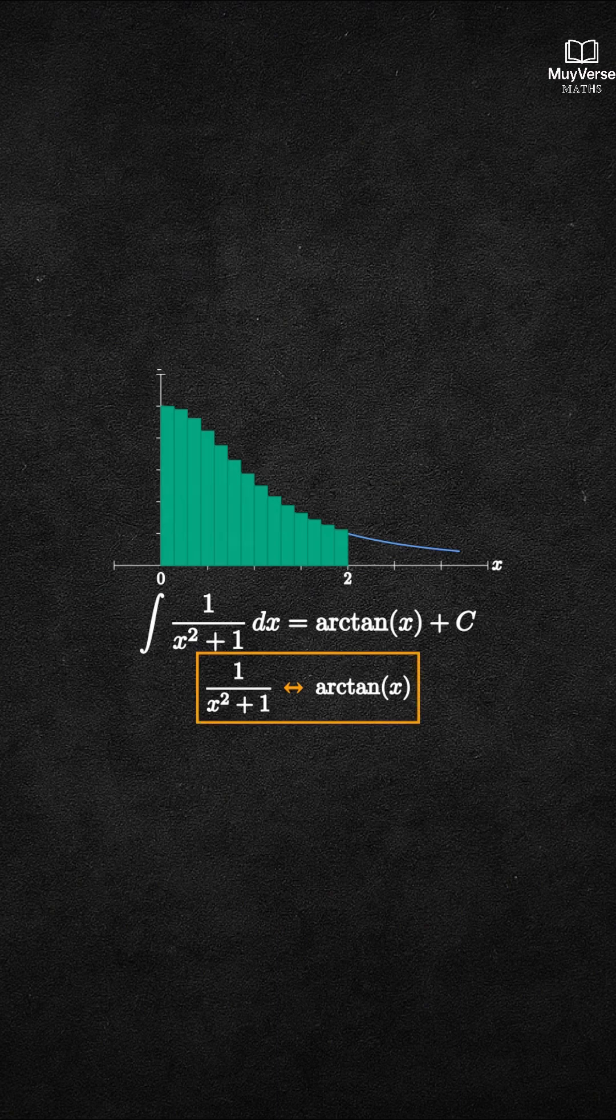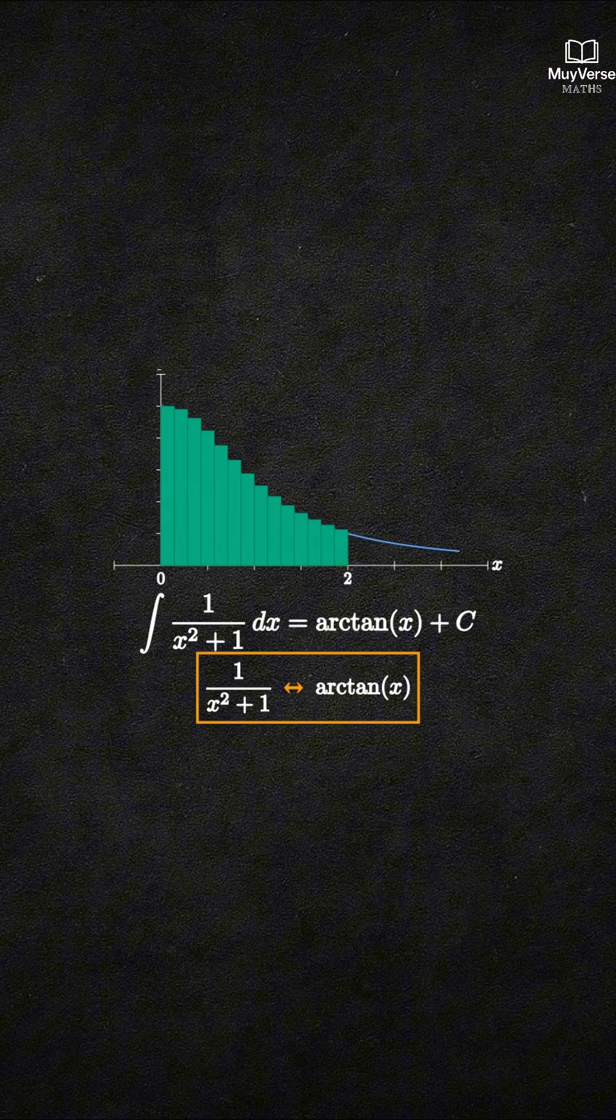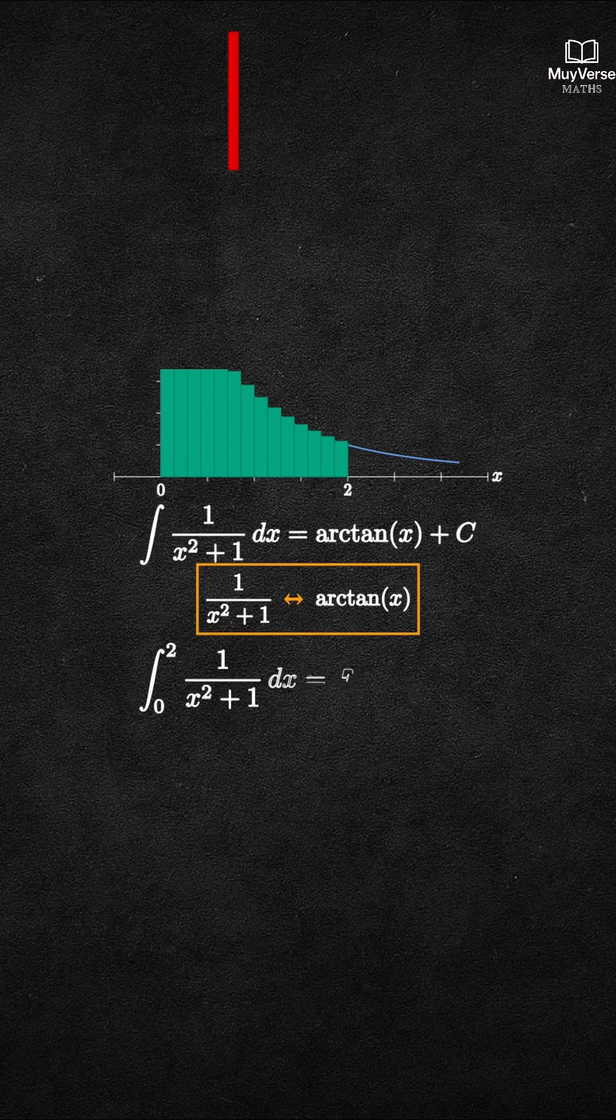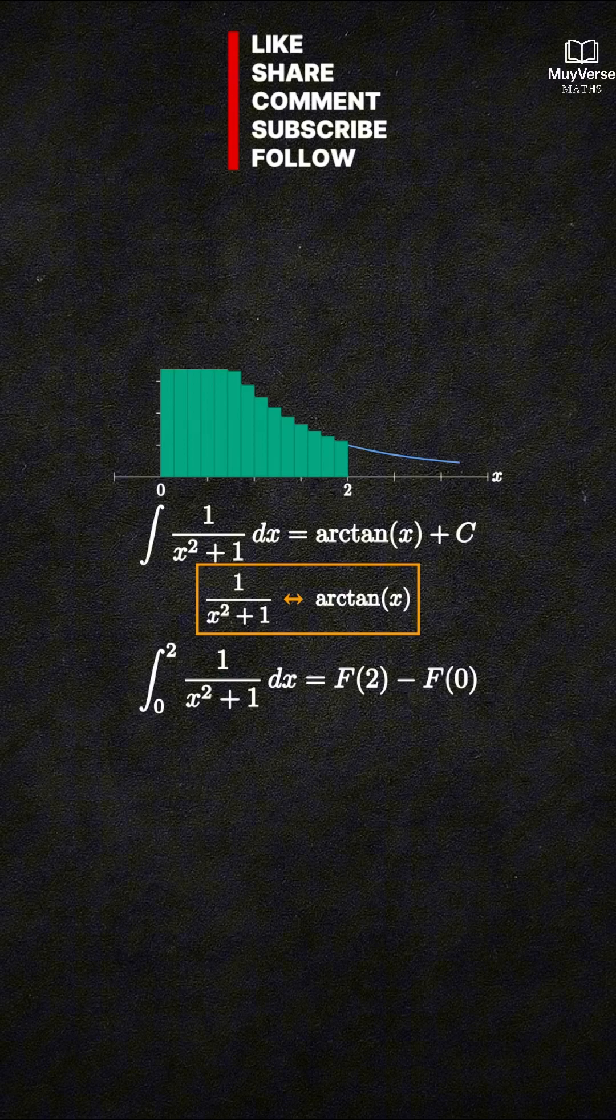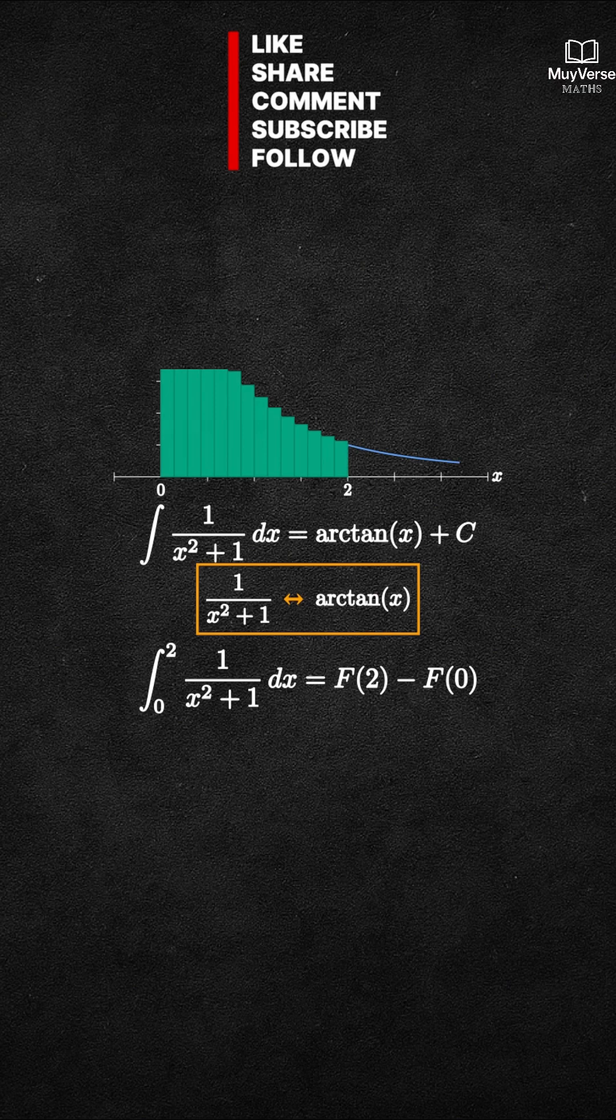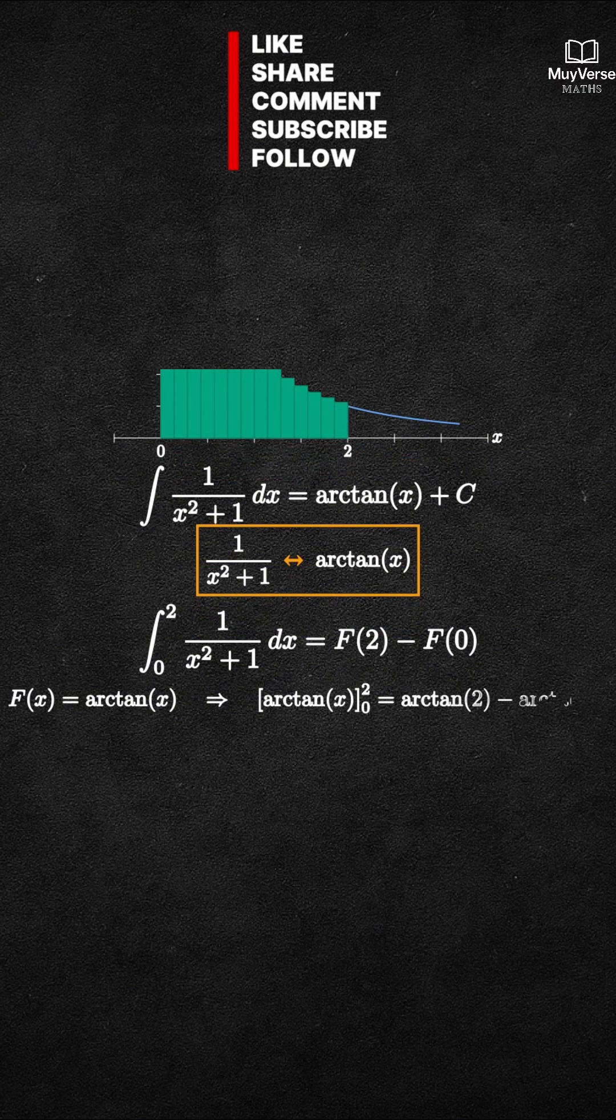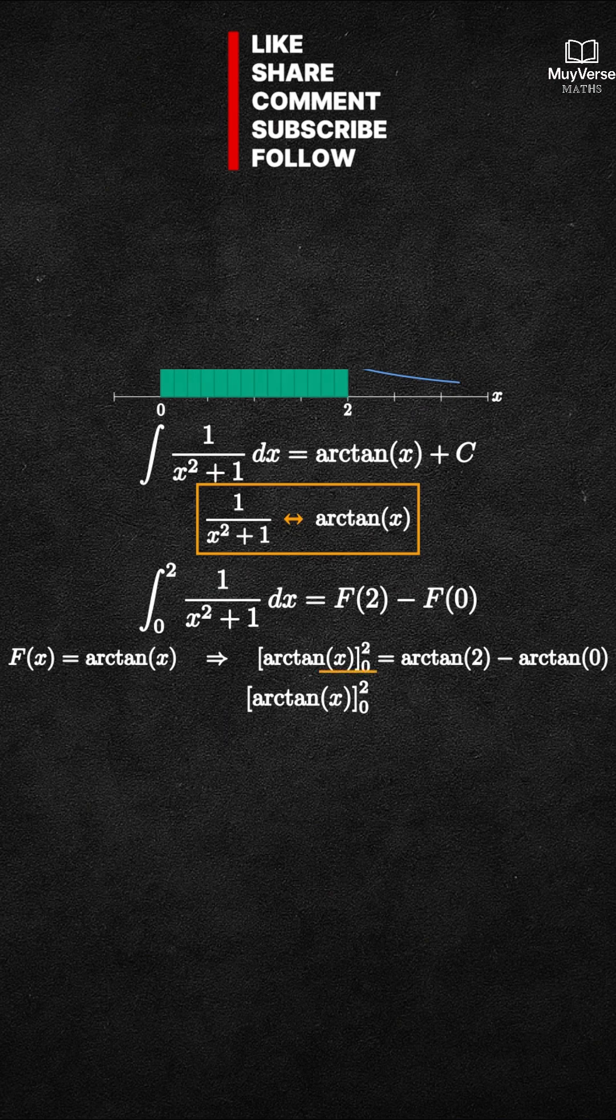Step 2. Apply the fundamental theorem of calculus. The integral from 0 to 2 of 1 over x squared plus 1 equals big F of 2 minus big F of 0, where big F is an antiderivative. Using big F of x equals arctangent of x, we get arctangent of 2 minus arctangent of 0.